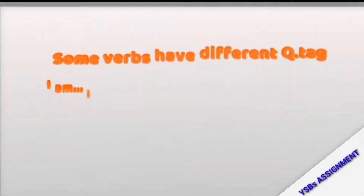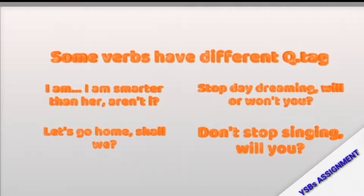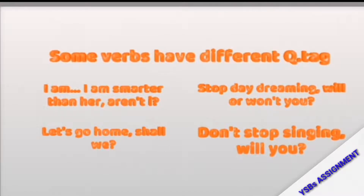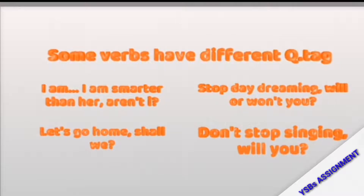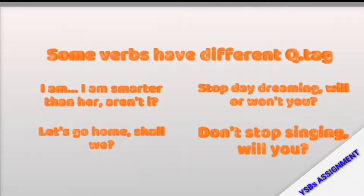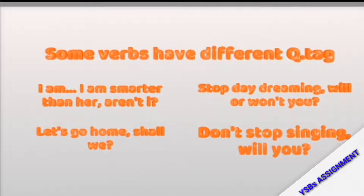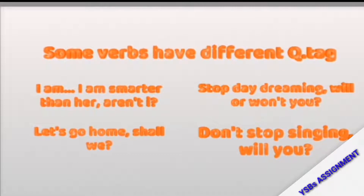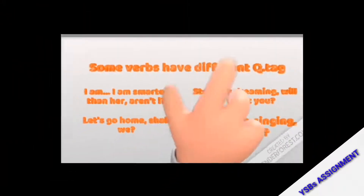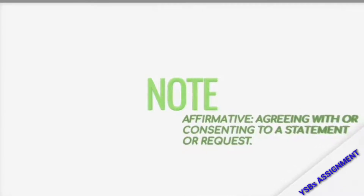Now, exceptions to rules one and two. Some verbs have different question tags. For instance, 'I am' has a different question tag: 'I am smart, aren't I?' Other examples: 'Stop the dreaming, will you?' / 'won't you?' And: 'Let us go home, shall we?' / 'Don't stop singing, will you?' These are flexible question tags — they don't follow a fixed pattern.